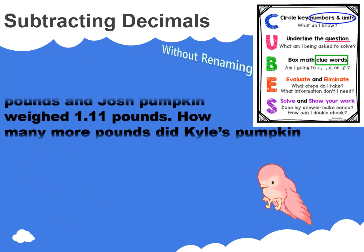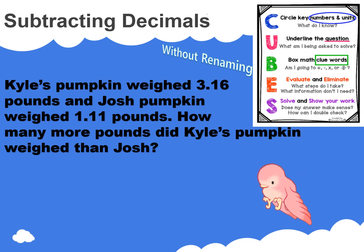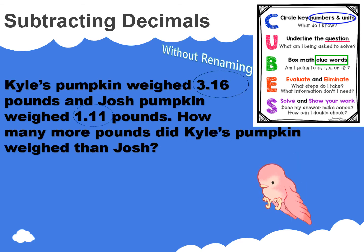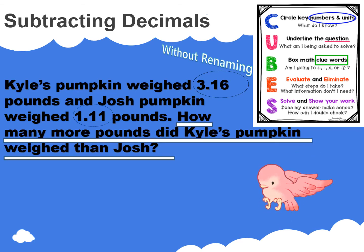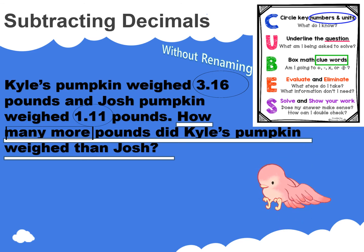Read this problem with me. Kyle's pumpkin weighed 3 and 16 hundredths pounds and Josh's pumpkin weighed 1 and 11 hundredths pounds. How many more pounds did Kyle's pumpkin weigh than Josh's? Circle the numbers you know. Underline the question. Box the clue word. Now evaluate — 'how many more' is indicating that we will subtract.